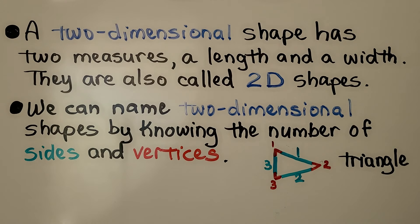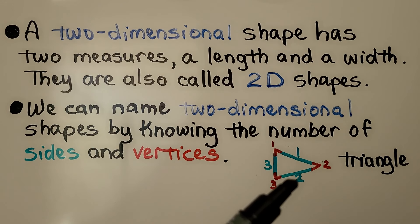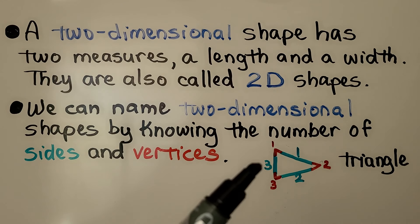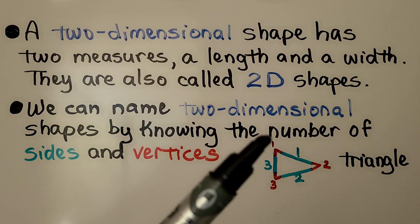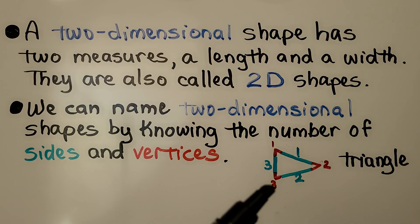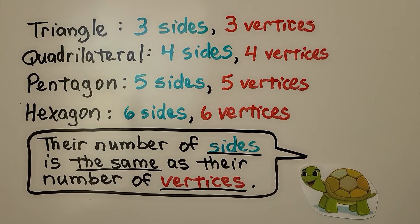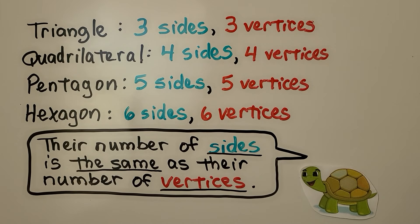We can name two-dimensional shapes by knowing the number of sides and vertices. This shape has one, two, three sides and one, two, three vertices. It's a triangle. A triangle has three sides and three vertices.